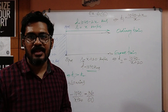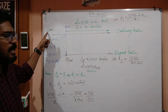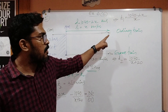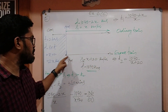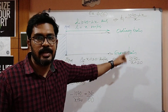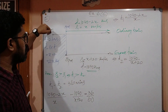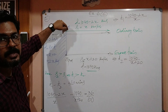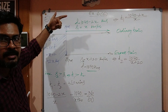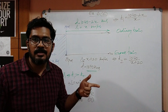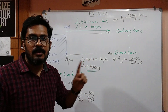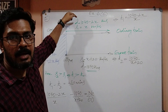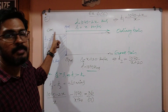Let us understand this question with the help of a small data table. I have written 6 p.m. for the ordinary train and 8 p.m. for the express train. The black line drawn is for the ordinary train and another line is for the express train. Now let me discuss the parameters we have to write for both these trains — including distance and speed.